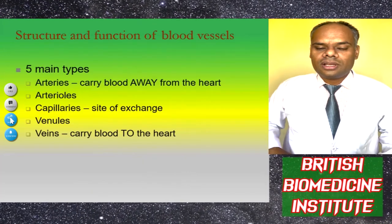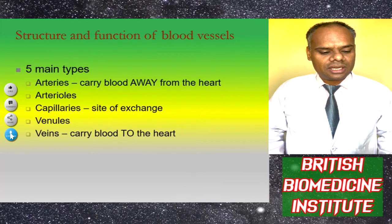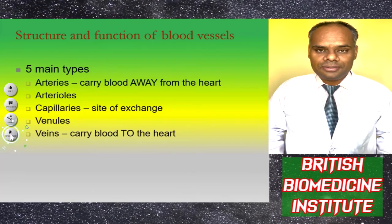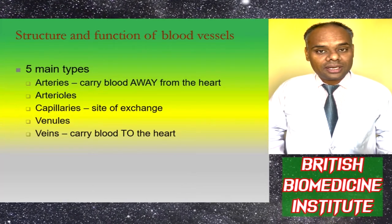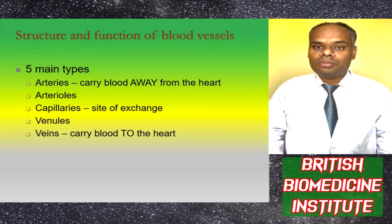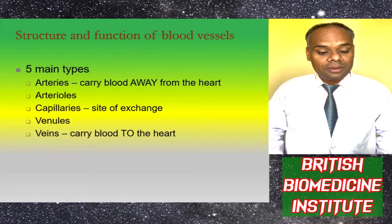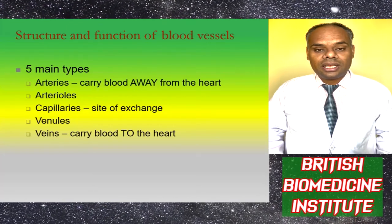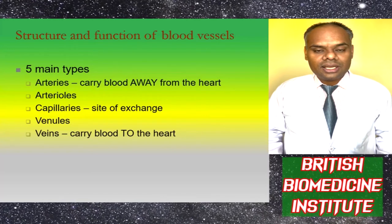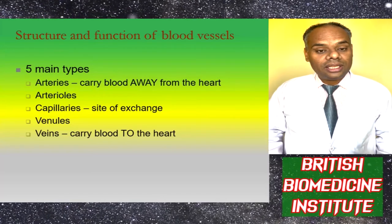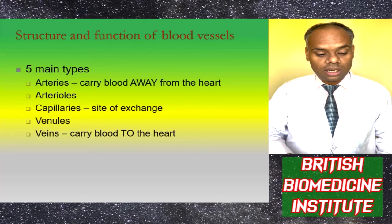The structure and functions of blood vessels: there are basically five main types. Arteries carry blood away from the heart. Arterioles and capillaries are the site of exchange. Venules and veins carry blood to the heart.